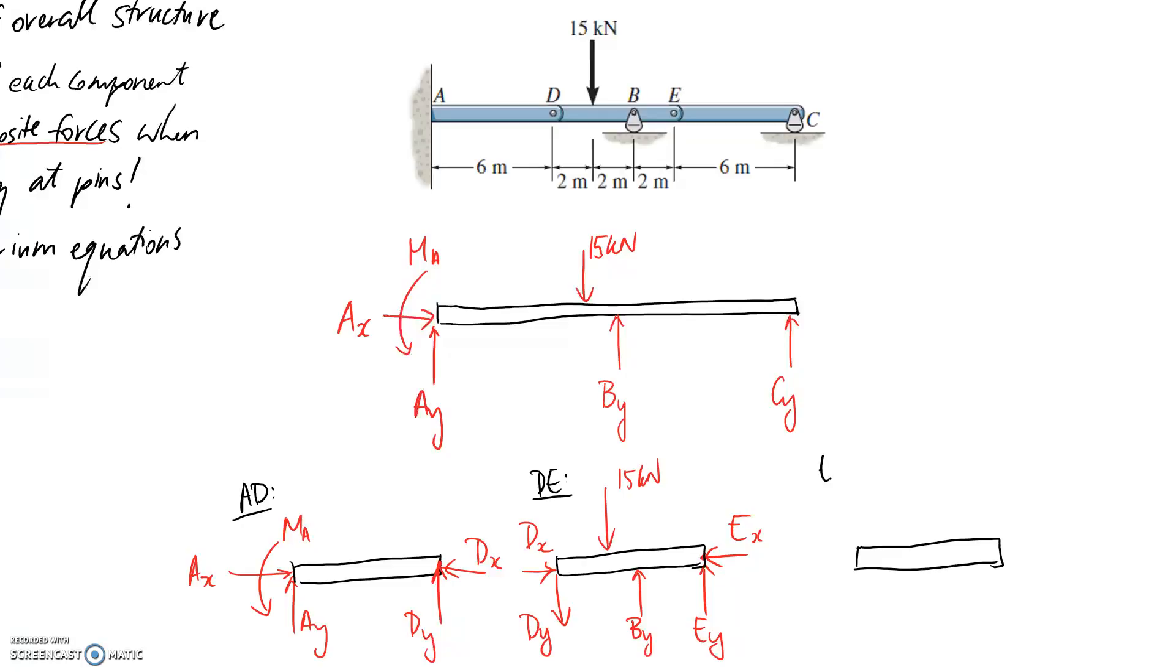So this is now the part EC. So I'm separating at this pin at E. So I need equal and opposite forces on the two components. So if this is going to the left, this one needs to go to the right. And if this one's going up, this one needs to go down. Finally, I've got this reaction force on the end. CY as well.